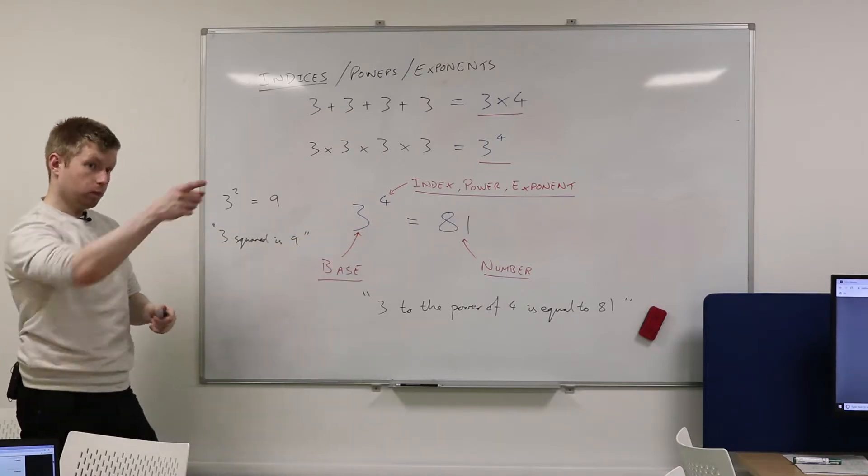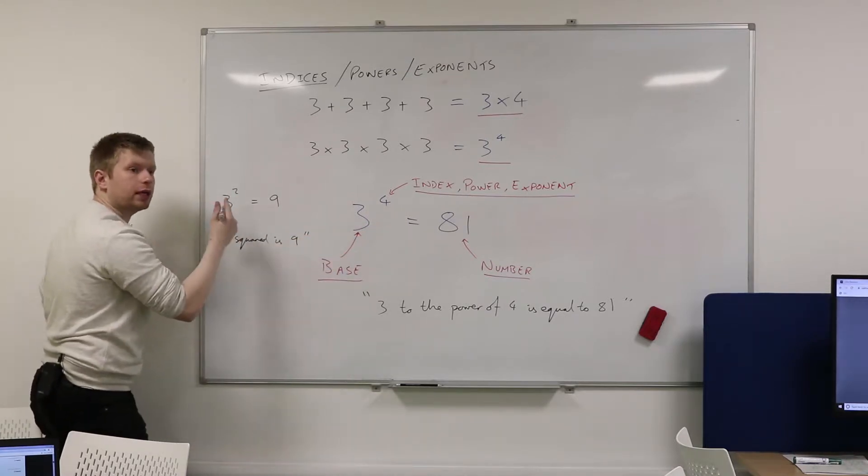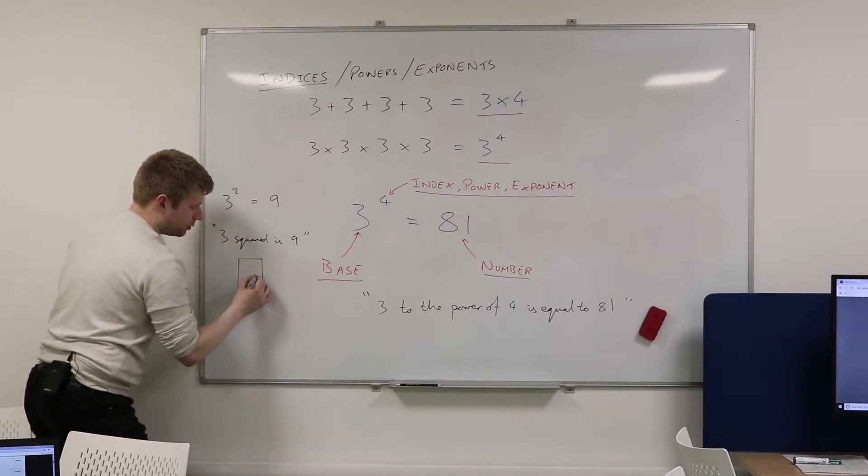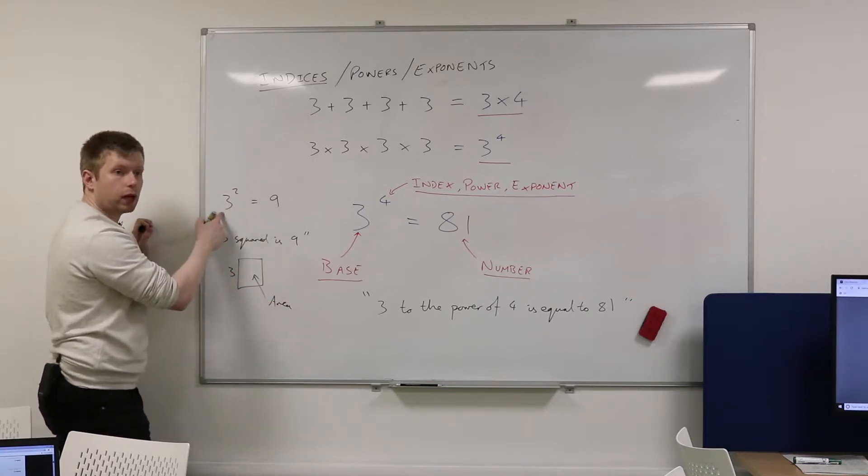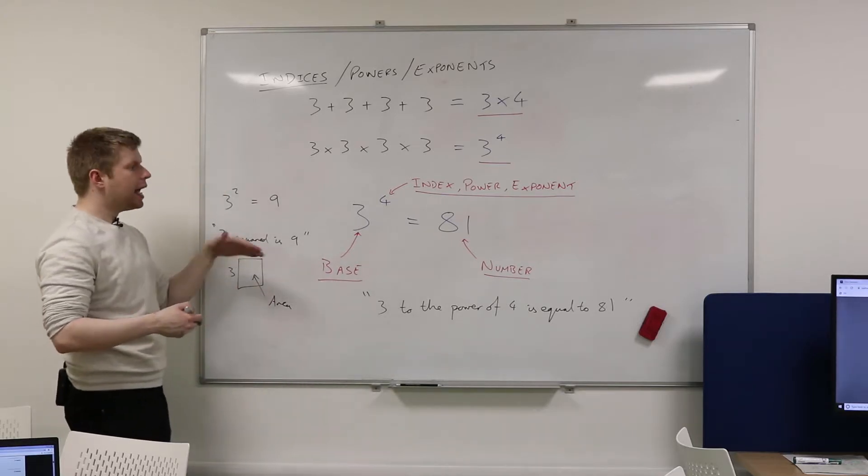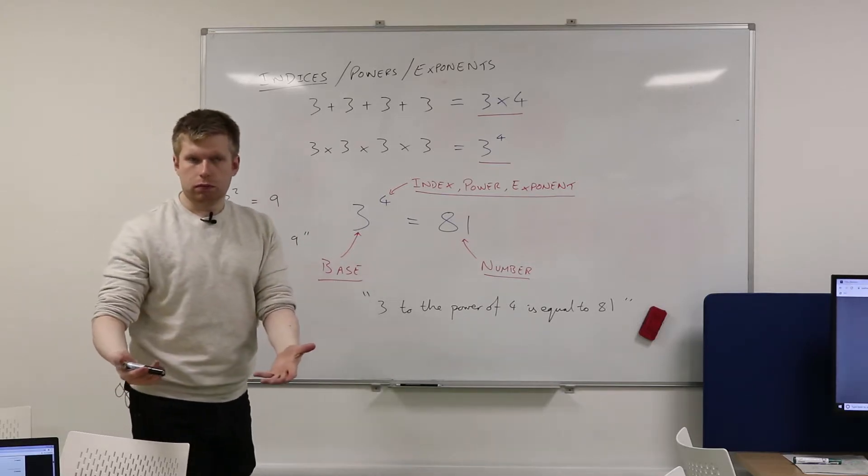Why do we say squared here and to the power of 4 here? Because it's the area of the square. Absolutely right. This is actually looking at something geometric. It's looking at a square, namely the area. And what's the side length of that square? 3.